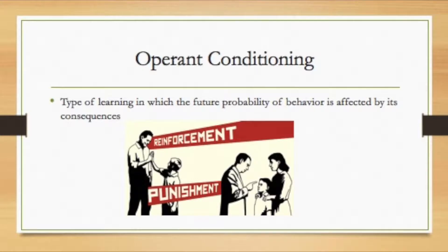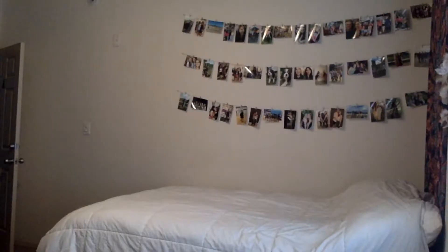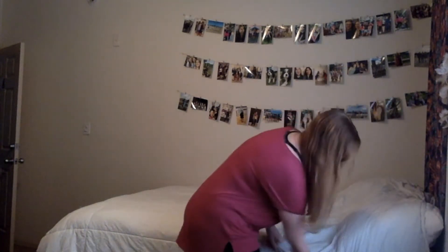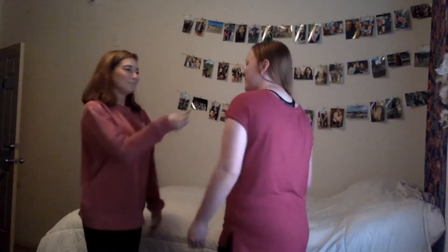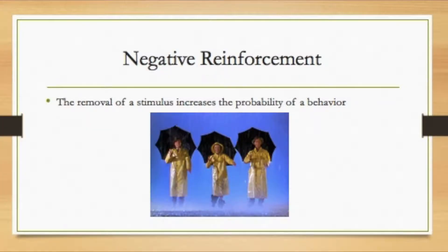Operant behavior is defined as a type of learning in which the future probability of behavior is affected by its consequences. One type of operant conditioning is positive reinforcement, where a presented stimulus increases the probability of behavior. An example would be getting $20 for cleaning your room.